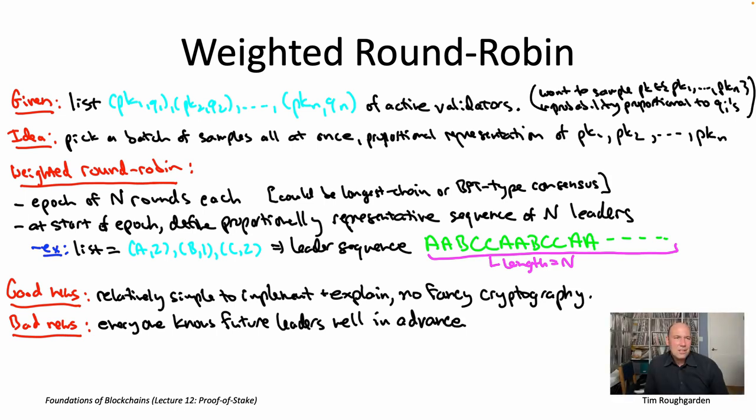Now, you might ask, is it really such a big deal that leaders are known minutes or even hours in advance? Like, so what? To some extent, that's kind of an open question, but there's definitely things you'd be worried about with the identity of leaders being revealed well in advance and that you'd worry about bad actors trying to somehow influence future leaders.